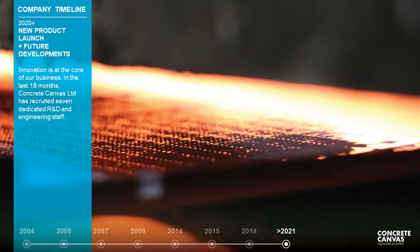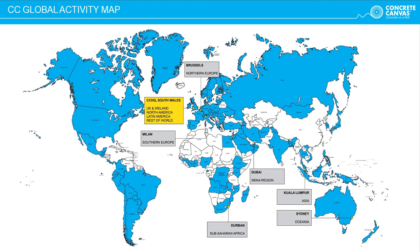Innovation is at the core of our company. We're constantly improving and developing our range of products, and we have some very exciting launches in the near future. Much of the exponential growth of the company is down to its rapid expansion into international markets. As of 2020, over 80% of the materials produced are exported. The company now provides its materials in over 80 countries through a network of sales partners, with overseas offices in Belgium, Italy, the UAE, South Africa, Malaysia and Australia.